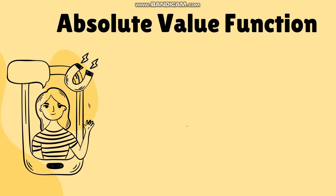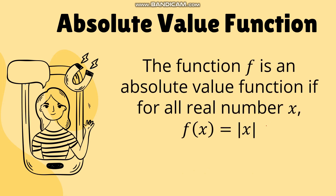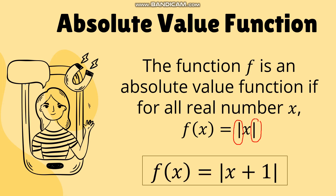The function f is an absolute value function if for all real numbers x, f of x equals the absolute value of x. You just have to look for the absolute value symbol. If your function has that symbol, it is automatically called an absolute value function. An example is f of x equals the absolute value of x plus 1. Another example is f of x equals the absolute value of 2x squared.